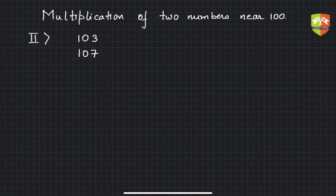Now, how far away from 100 is it? In the previous case with 97 and 98, we were finding out how far the number was from 100. Here, how far is 103 from 100? So you write plus 3, since 103 minus 100 is plus 3. How far is 107 from 100? Plus 7.